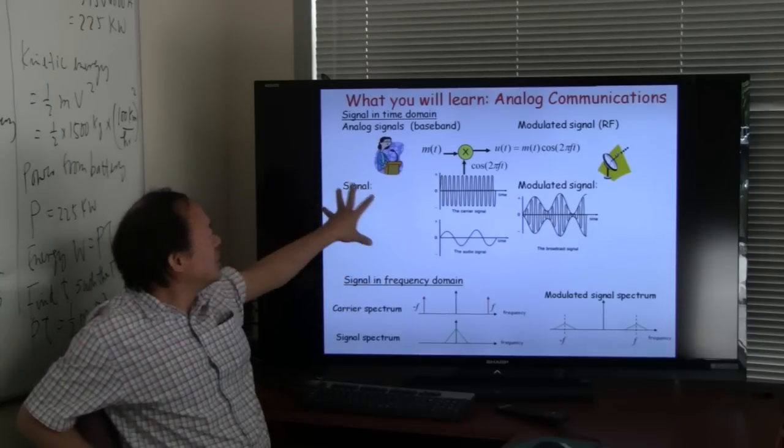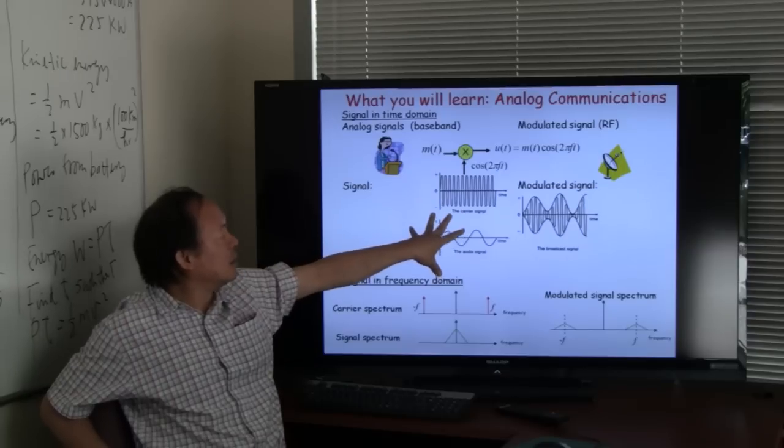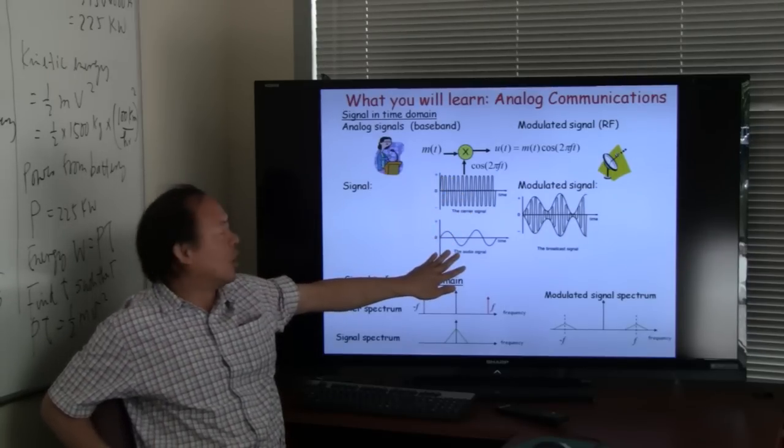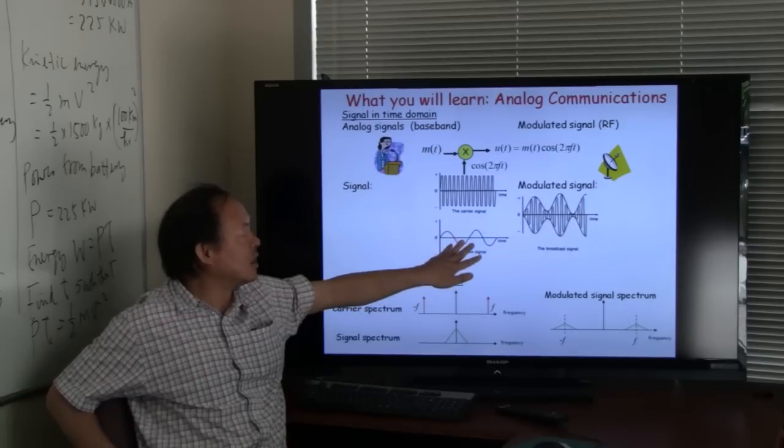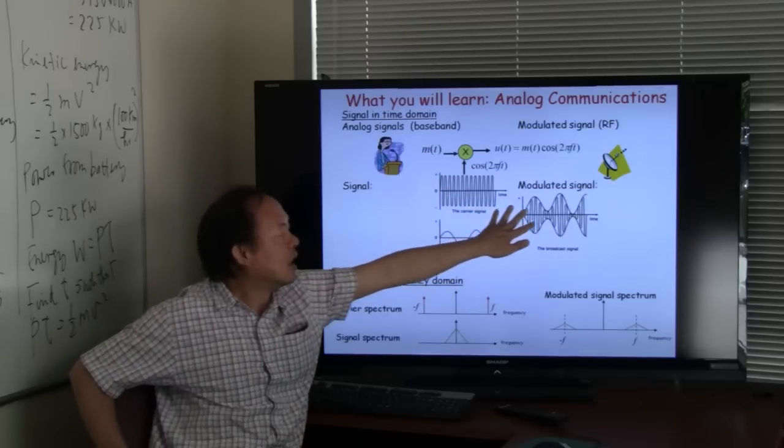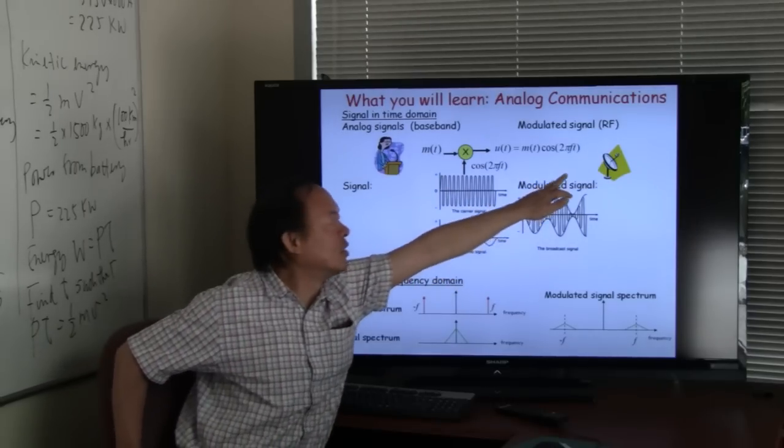So what you see here is a signal whereby the carrier signal is a pure sine wave. The signal itself, the audio signal is a sinusoid, in this case here a sinusoid. So what you have is a signal that modulates a carrier and this is the signal that you send over the air wave.